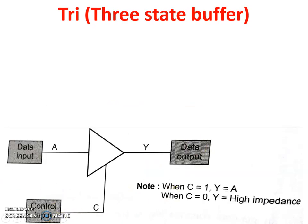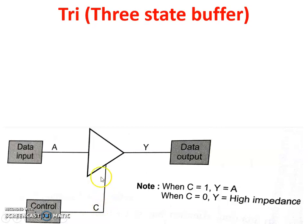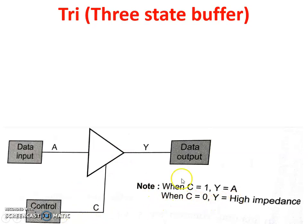This is the tri-state buffer circuit — it is a digital circuit. Here, A indicates data input, Y indicates data output, and C is the control input. When an input is given, the output generated is based on C. So when C is equal to 1, Y equals A, and when C is equal to 0, Y is equal to high impedance.